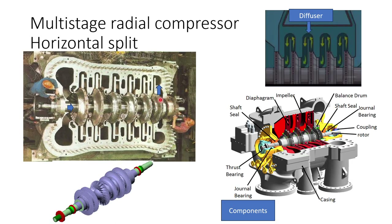On the left-hand side we can see a photograph of a horizontally split compressor. The joint is in the horizontal section. This is the housing, this is the rotor, and this is the impeller. Gas is entering here and coming out radially, perpendicular to the shaft. This is the diffuser, which increases the pressure of the gas by reducing the volume.